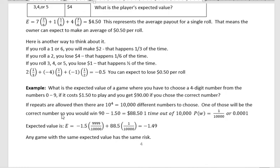One of those 10,000 numbers is 0000, so there are 10,000 numbers to choose from and only one will be correct. If you win the $90 but subtract the $1.50 you paid to play, your profit is $88.50, and that happens 1 out of 10,000 times. The expected value calculation is: (−$1.50 × 9,999/10,000) + ($88.50 × 1/10,000). Adding those together gives an expected value of negative $1.49.